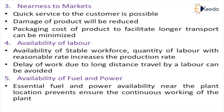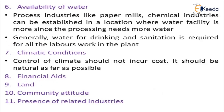The fifth factor is availability of fuel and power — these two are major requirements for all industries, and should be available in the vicinity. The sixth factor is availability of water. In process industries such as chemical industries, nothing can be done without water. If a water source is nearby, it can be used for processing. In addition, water is needed for drinking and sanitation purposes for all the labor force.